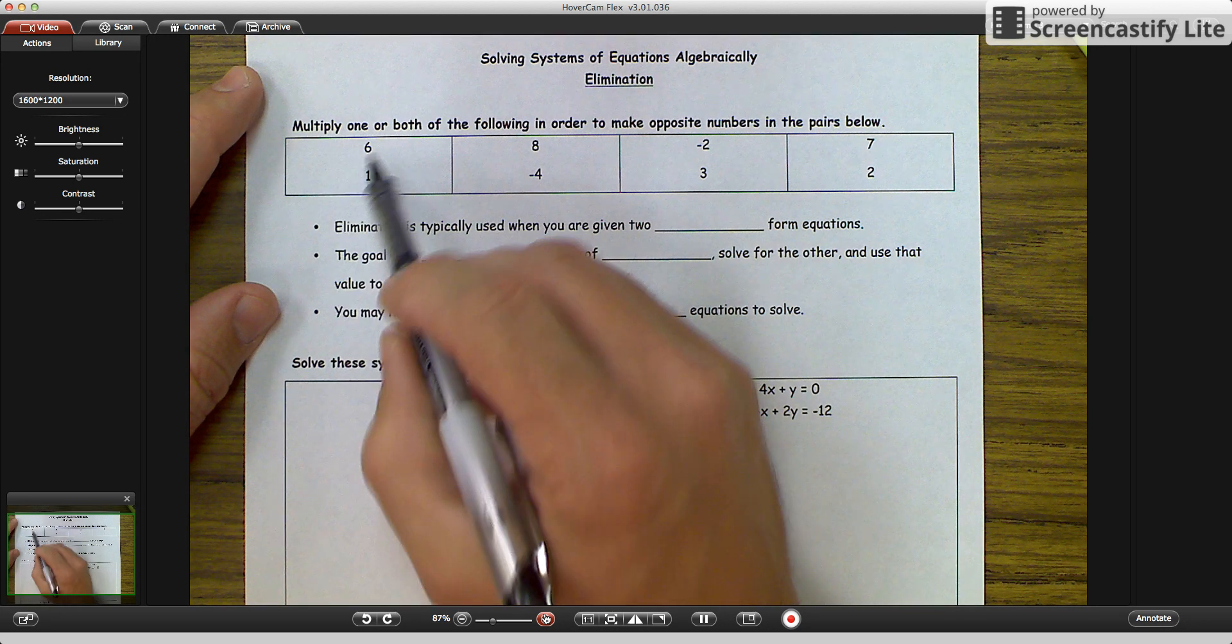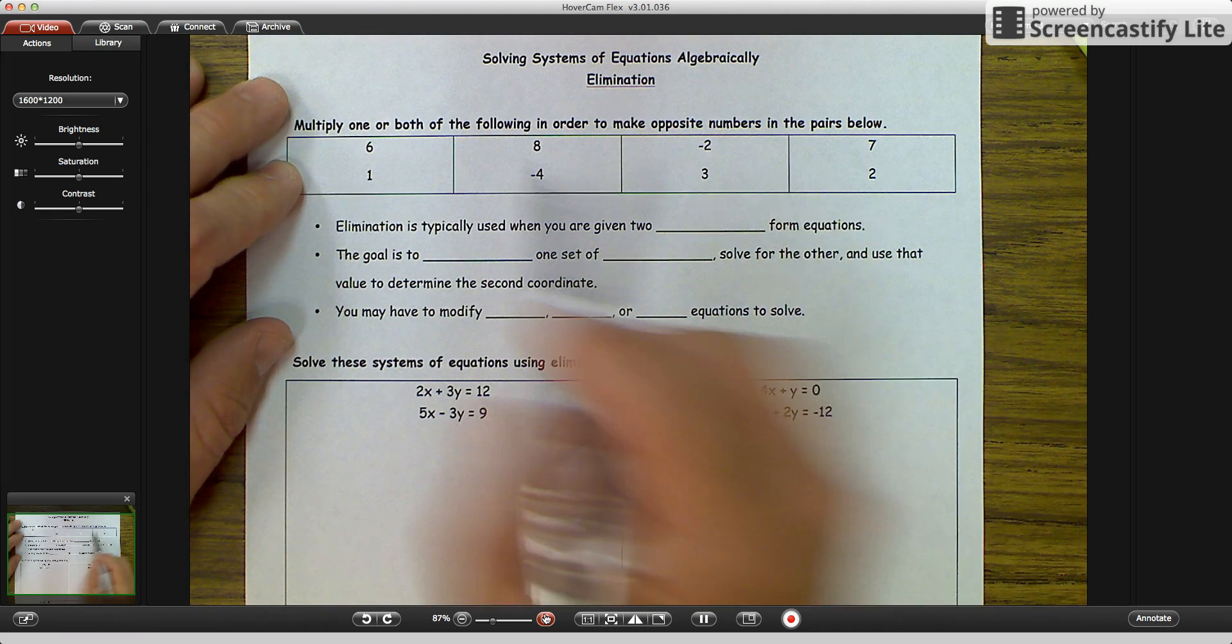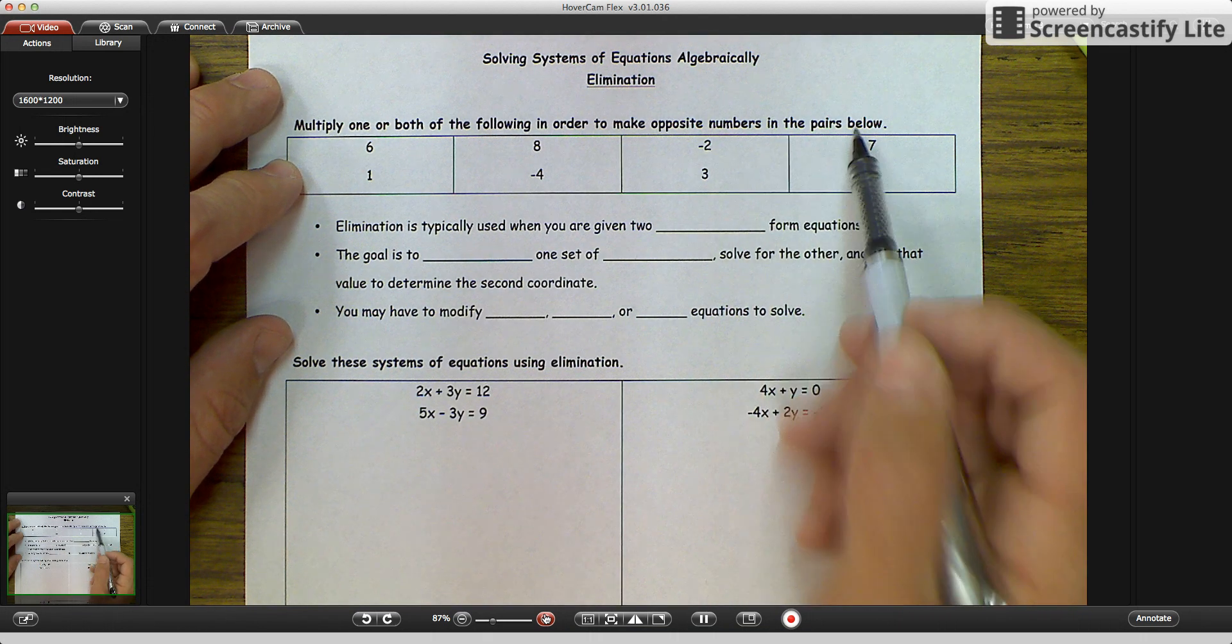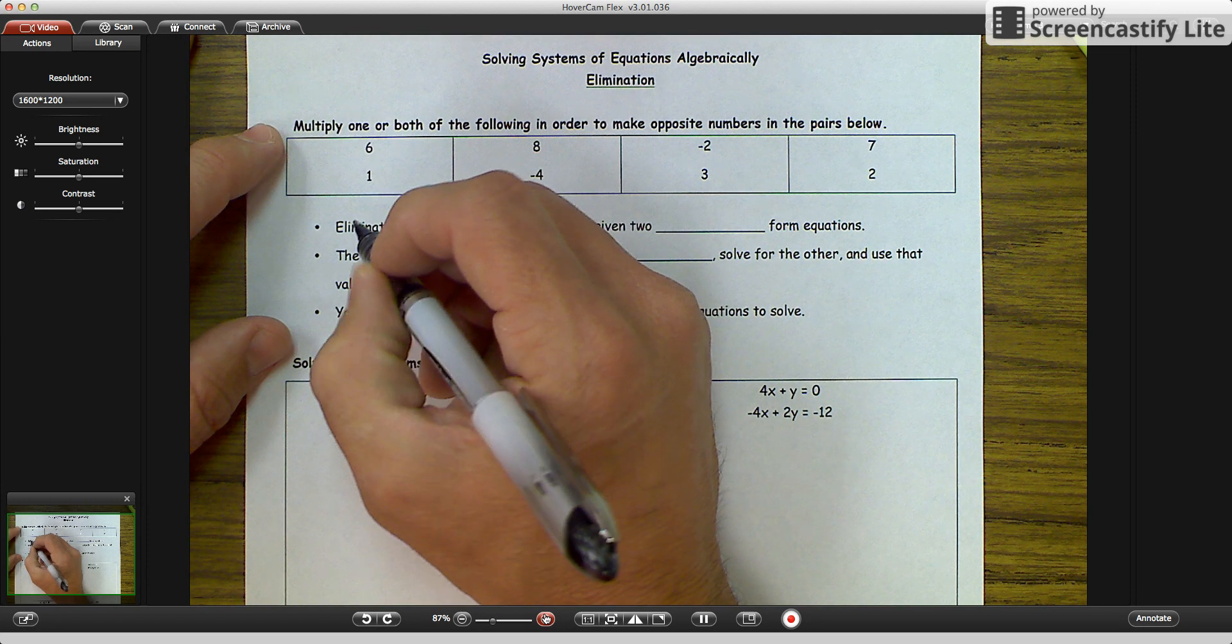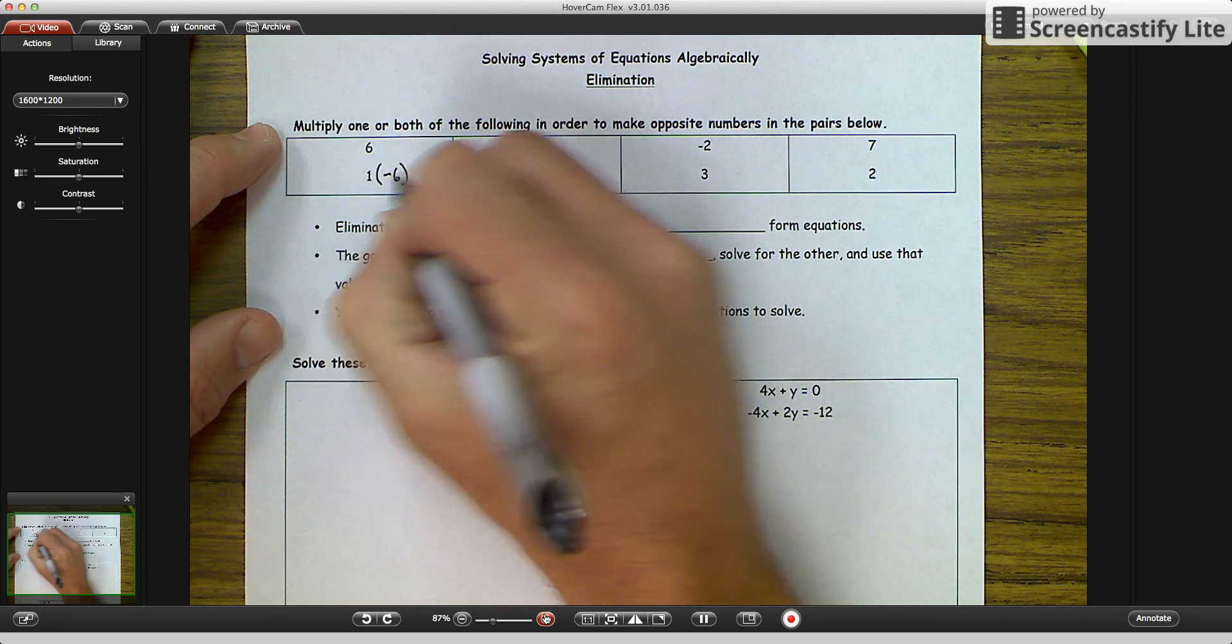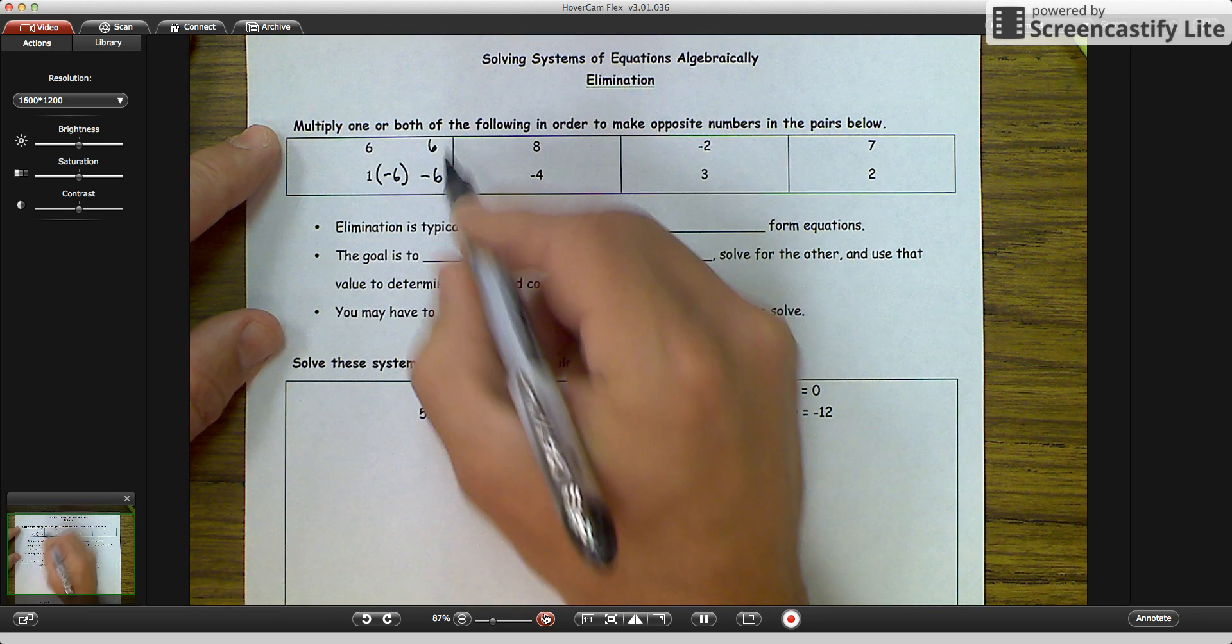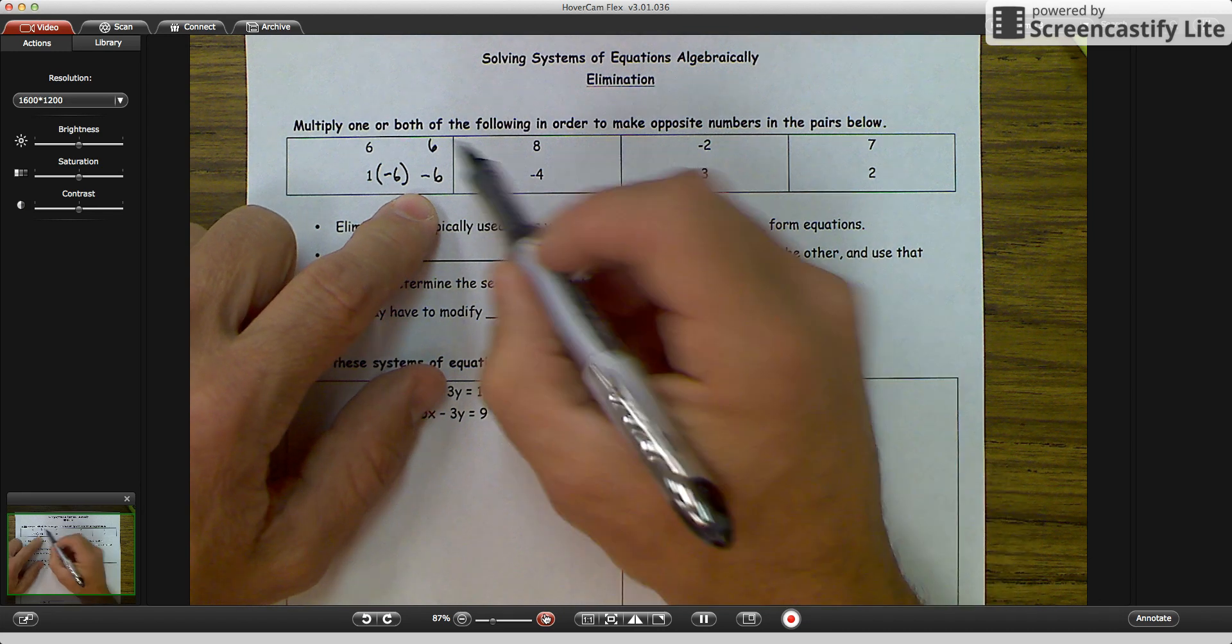So a little bit of a practice run right now because you're going to eliminate by multiplying. So it says multiply one or both of the following in order to make opposite numbers in the pairs below. So if I have a 6 and a 1, what can I multiply? I can multiply the 1 by a negative 6, and then you have 1 times a negative 6 is negative 6. And then if we leave the 6 alone, they would be opposite numbers. And that's what we're trying to get so that we can eliminate them.